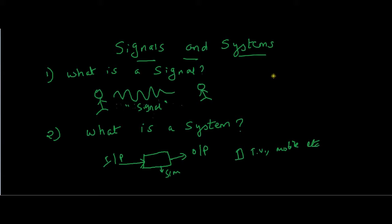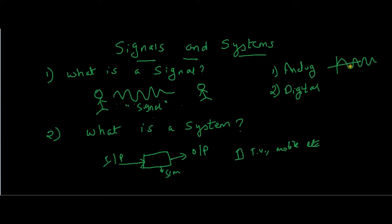Coming to the signal, there are two types of signal. Signal can be divided broadly into two types: one is analog, the other is digital. As the name says, analog is nothing but a continuous signal. Digital signal can be obtained from analog signal by sampling — we will talk about that later. For now we will understand the basic difference: this is the analog signal and this is the digital signal. There are branches which deal with each type.